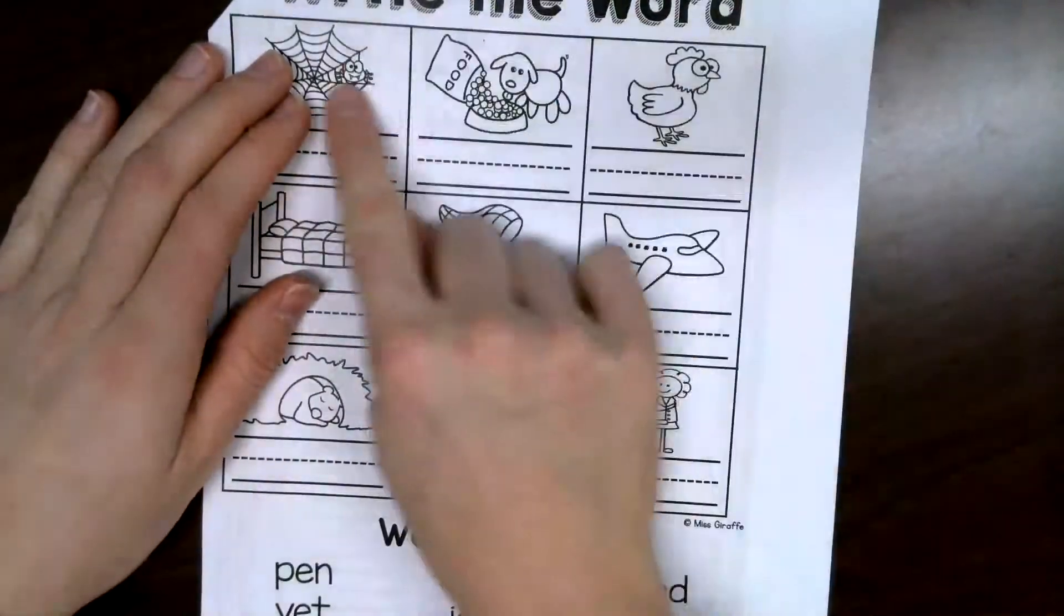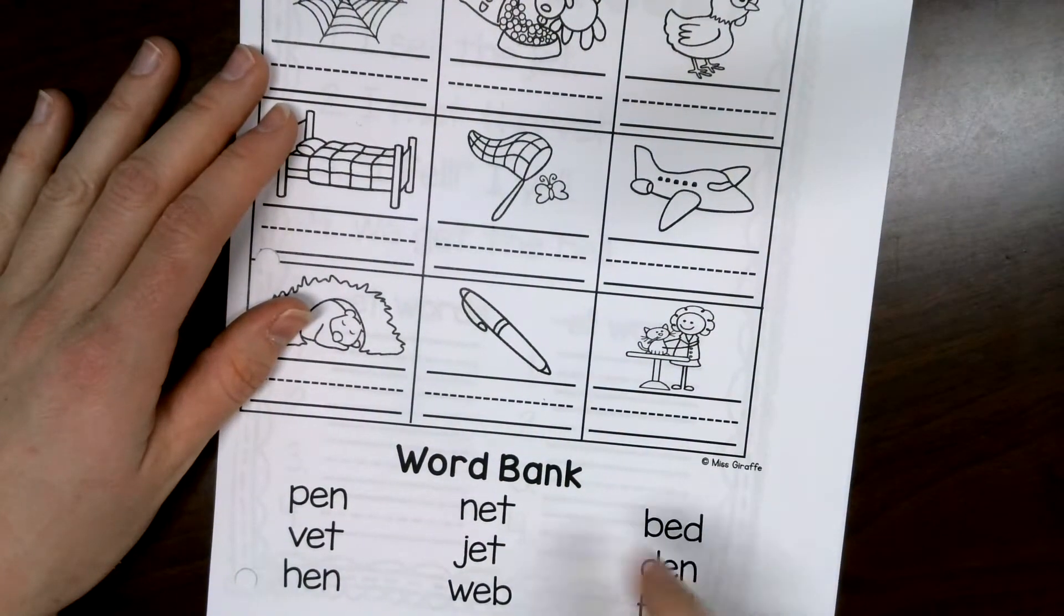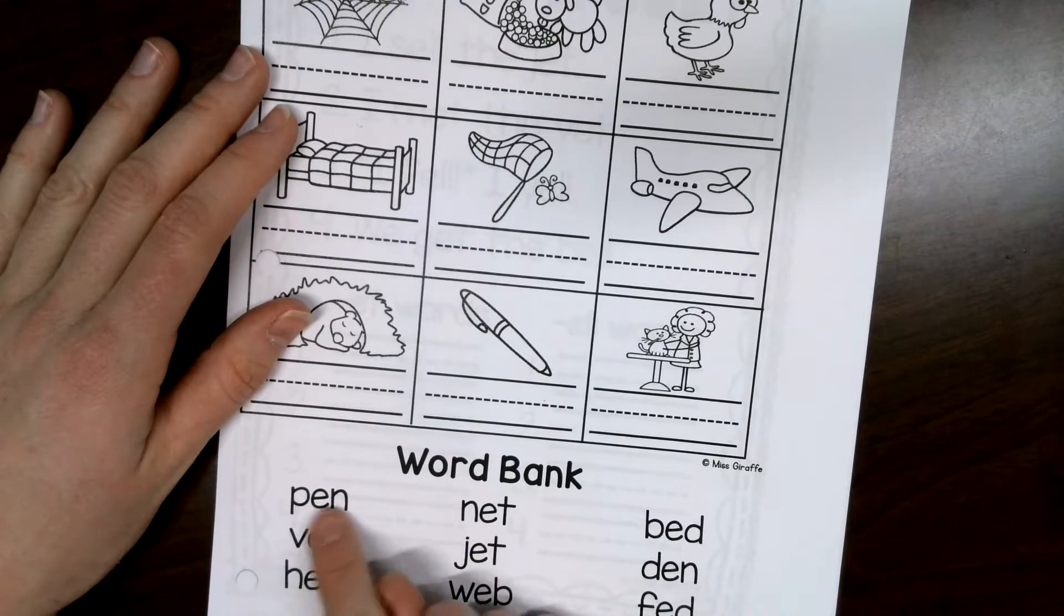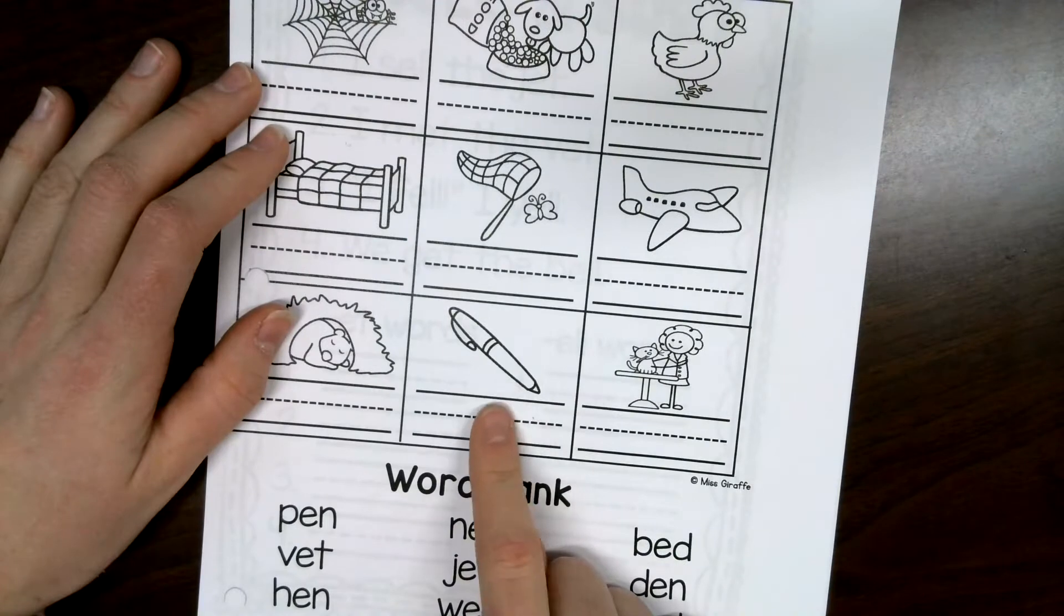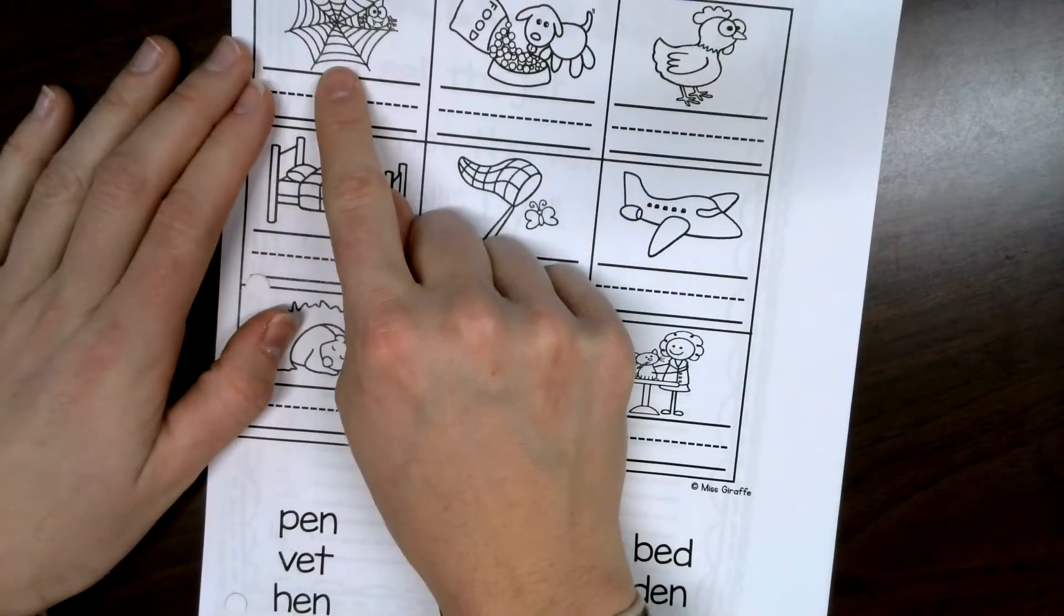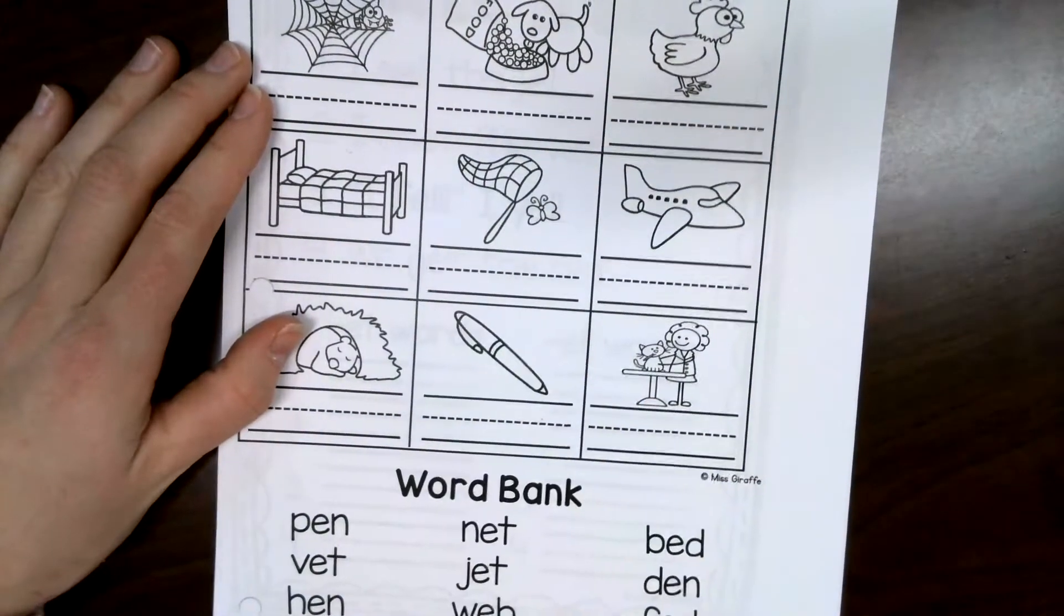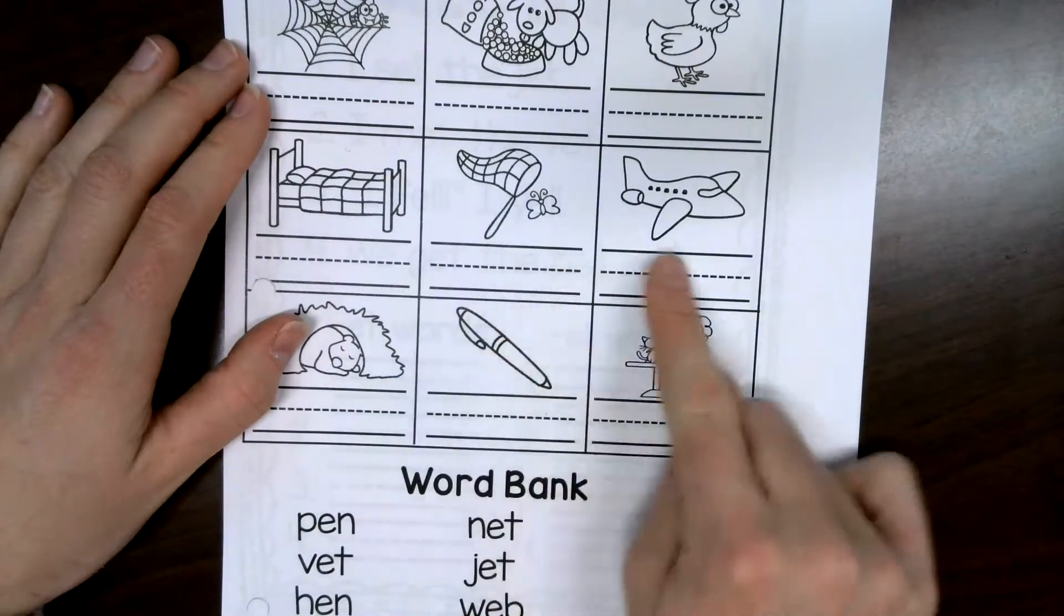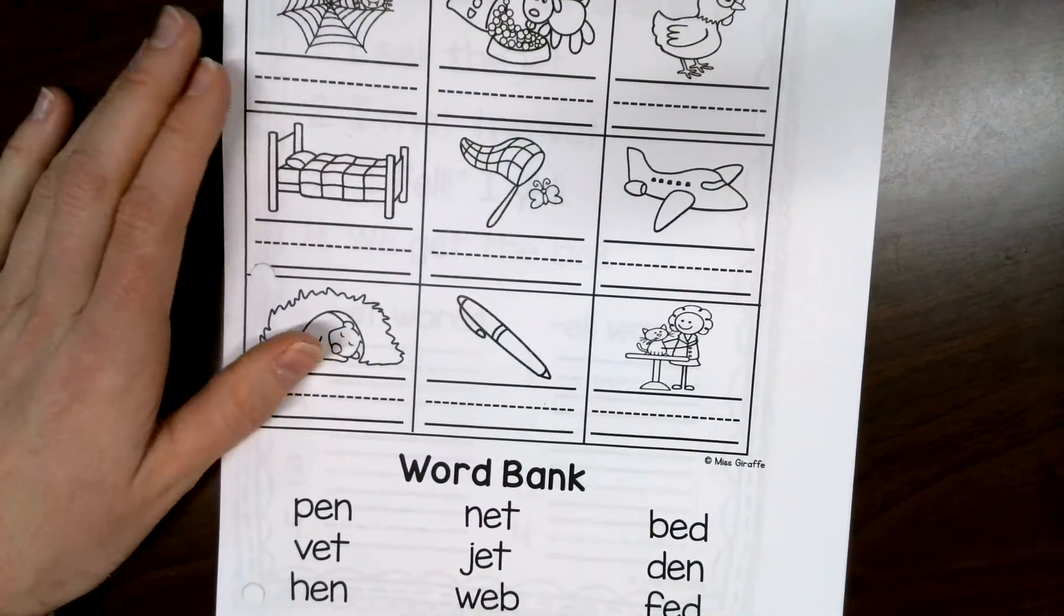For this one, we have our pictures. And then we have our words down here. So, this is where you're going to sound out these words. So, I would look. This is a P-E-N. Pen. Where is the picture of the pen? Right here. So, I can write pen. Now, if you know this is a web, you could go W-E-B-Web and then cross it off. So, you can go in order here or you can go in order of the words. But you need to write each word that goes with the picture on the lines. And you can cross them out of your word bank once you're done with them.